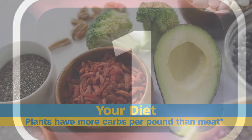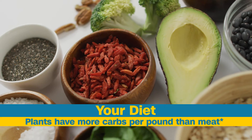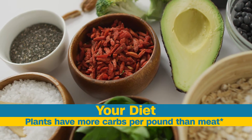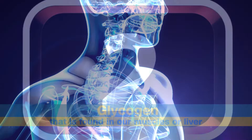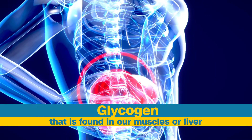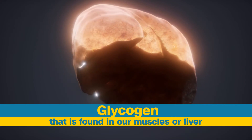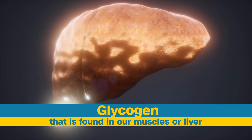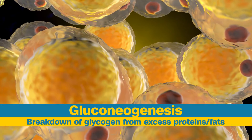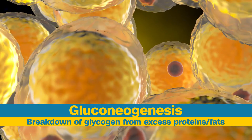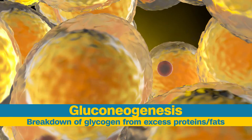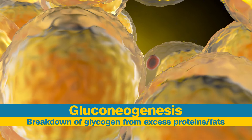The glucose molecule has 6 carbons and it comes from three sources: 1) your diet — pound for pound, plants have a larger carbohydrate source than meat; 2) glycogen found in our muscle or liver, where these organs convert excess glucose to glycogen to save for fuel later; and 3) gluconeogenesis — the breakdown of glycogen from excess proteins and fats stored in adipose and liver tissue.